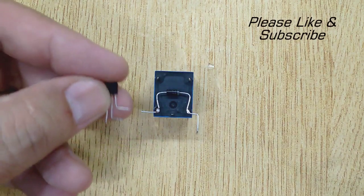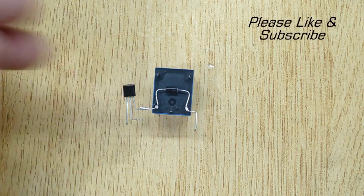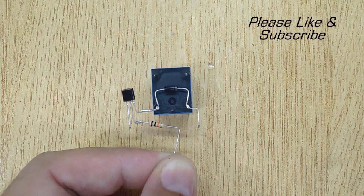Then, solder the collector of the transistor with the first pin of the relay. After that, solder a 1K ohm resistor with the base of the transistor.